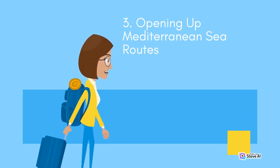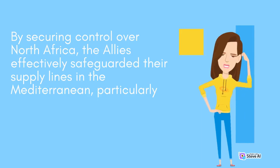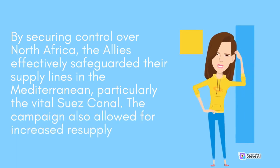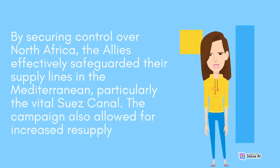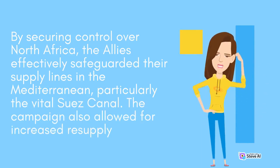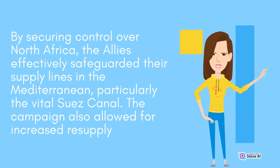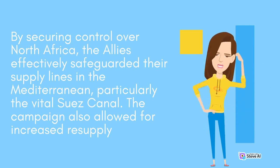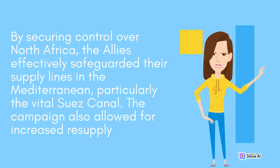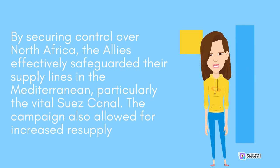Opening up Mediterranean Sea routes: by securing control over North Africa, the Allies effectively safeguarded their supply lines in the Mediterranean, particularly the vital Suez Canal. The campaign also allowed for increased resupply and reinforcement options for the Allies, enabling further offensives in Europe.